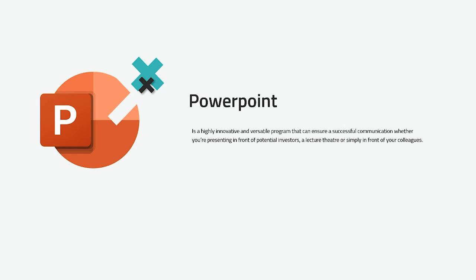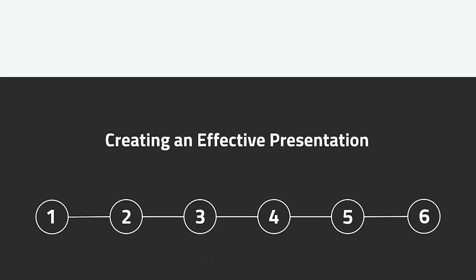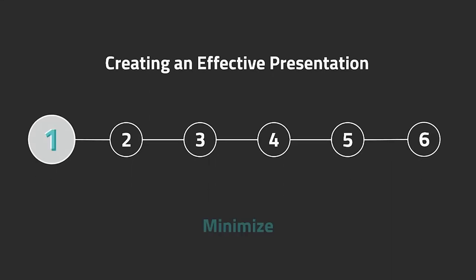Now let us talk about how we can create an effective PowerPoint presentation. I have six tips you can use. The first one is to minimize. When creating our PowerPoint presentations, we must make them as concise as possible — the fewer slides, the better. Keep in mind that PowerPoint presentations are only visual aids and should not contain all the information you are about to say.